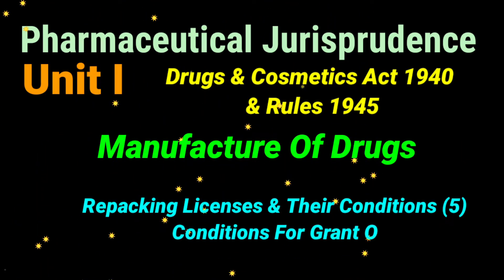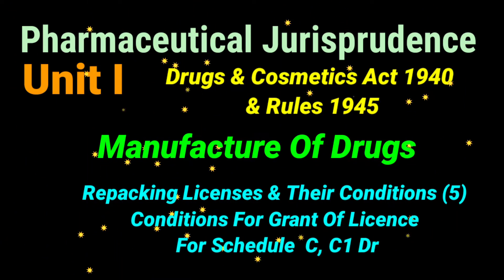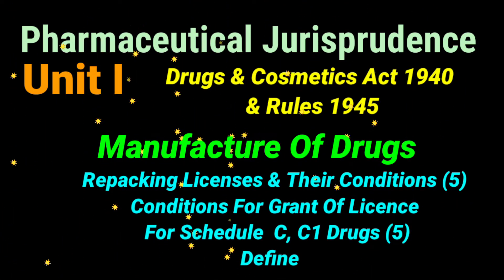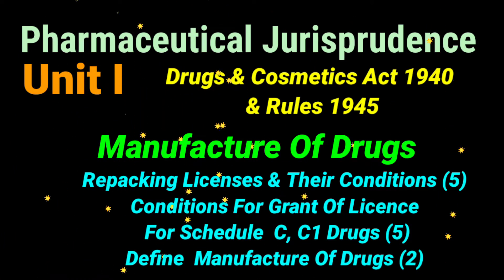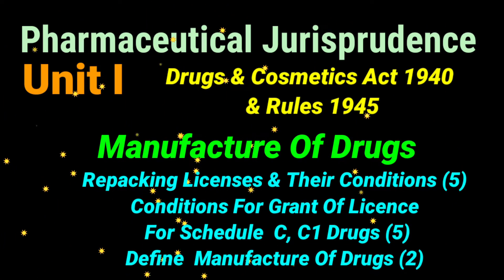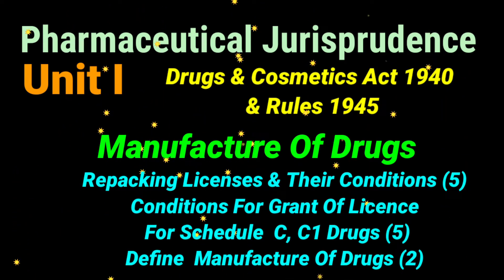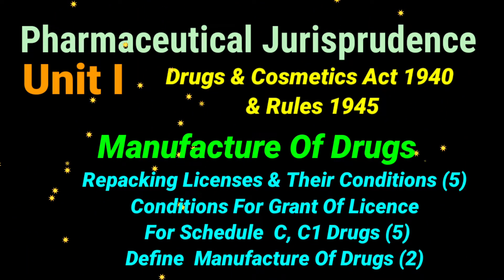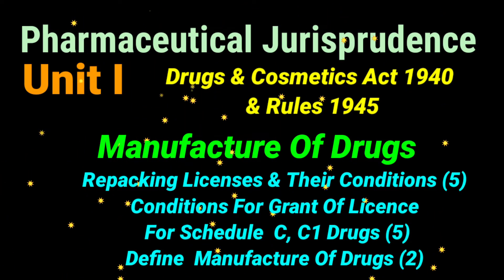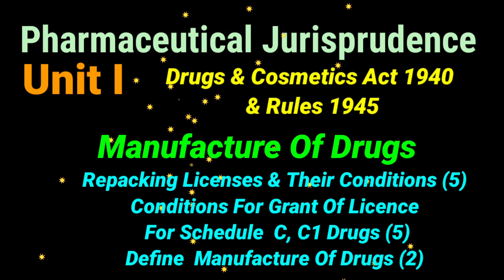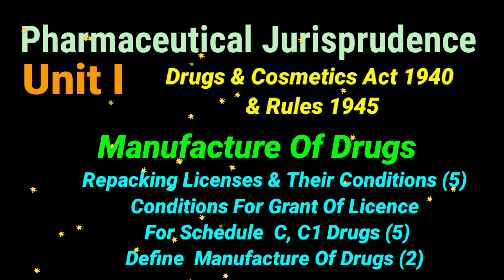The next chapter in Unit 1 covers manufacture of drugs. Important questions here include: repacking licenses and their conditions, conditions for grant of license for Schedule C and C1 drugs, and the definition of the term 'manufacture of drugs.' These three important questions are categorized under the Drugs and Cosmetics Act 1940 and Rules 1945.